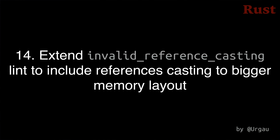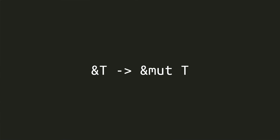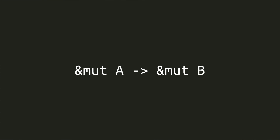Number 14: The deny-by-default compiler lint invalid_reference_casting already checks for when you cast an immutable reference to a type to a mutable reference to the same type, but now it also checks if you cast from a mutable pointer of one type to a mutable pointer to another type that has a bigger memory requirement. This is only possible in unsafe code, and this lint helps make such casting a bit safer.